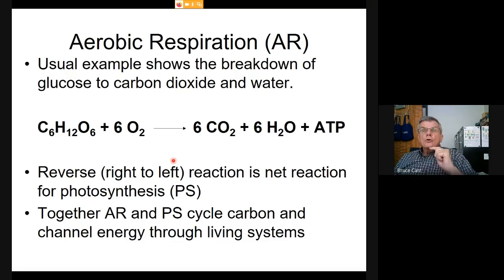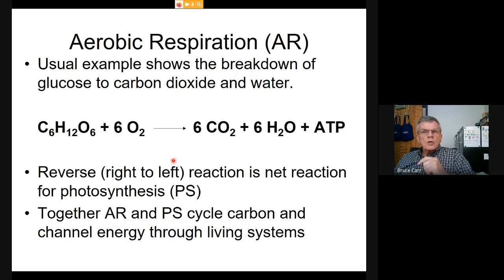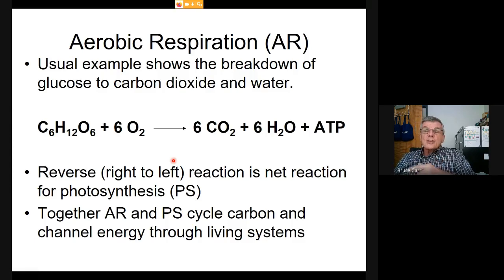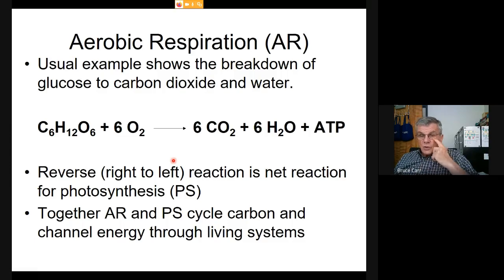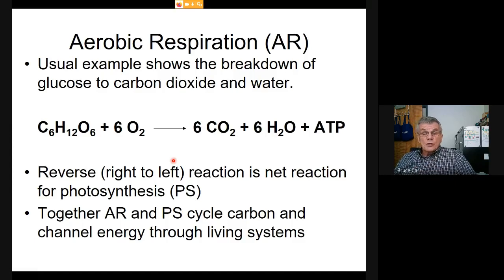If you ask where does that energy to transport a vesicle or divide a cell come from—it comes from nutrient molecules. Where does that bond energy come from? It comes from organisms that made those food things like starch. And where does that come from? It comes from sunlight. We're talking about radiant energy—sunlight—with most of the energy in the visible wavelengths: 400 to 700 nanometers. Heterotrophs run on ATP, but that ATP comes eventually from sunlight.